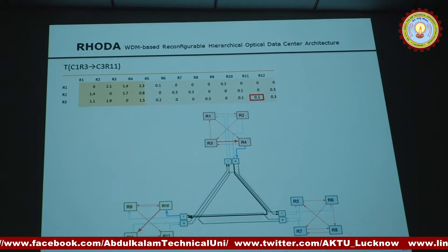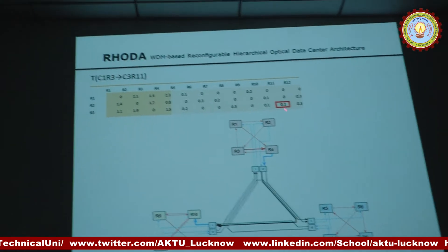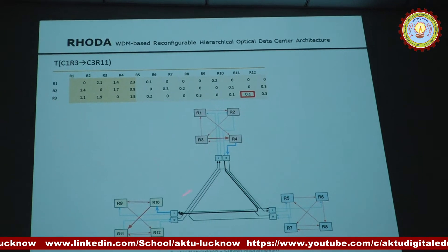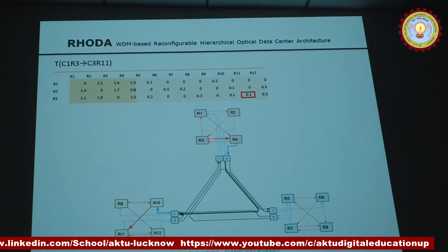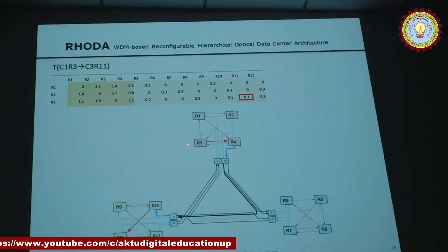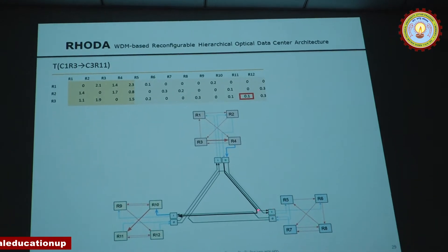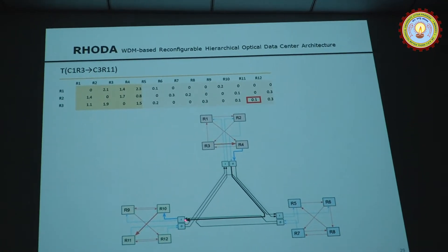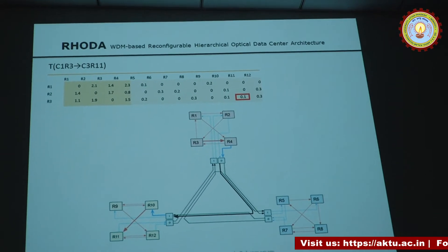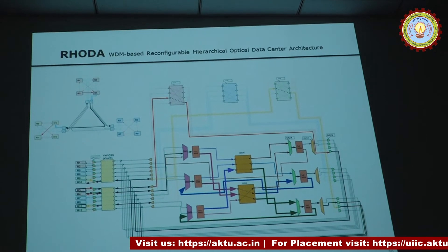As an example path: R3 to R11. R3 is in cluster C1, and R11 is in cluster C3. Using the formed topologies, the signal from R3 goes along its cluster, is routed to cluster C3, and then reaches R11. That's the path it would follow in this architecture.